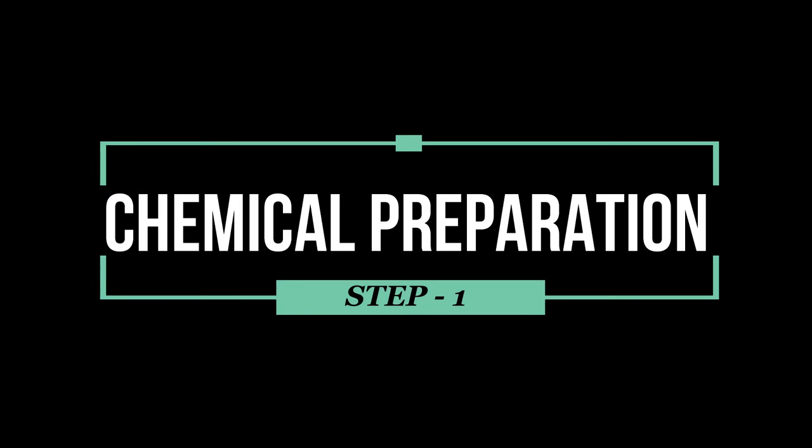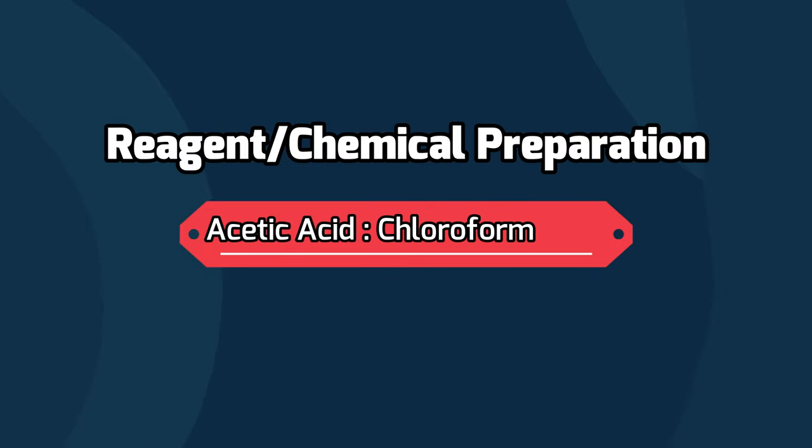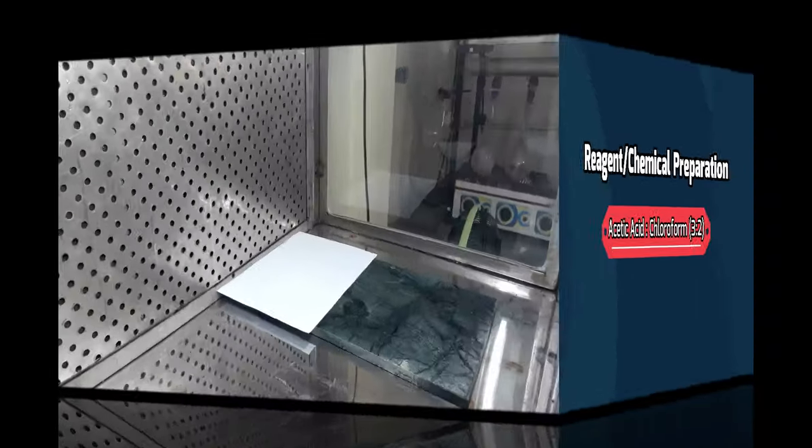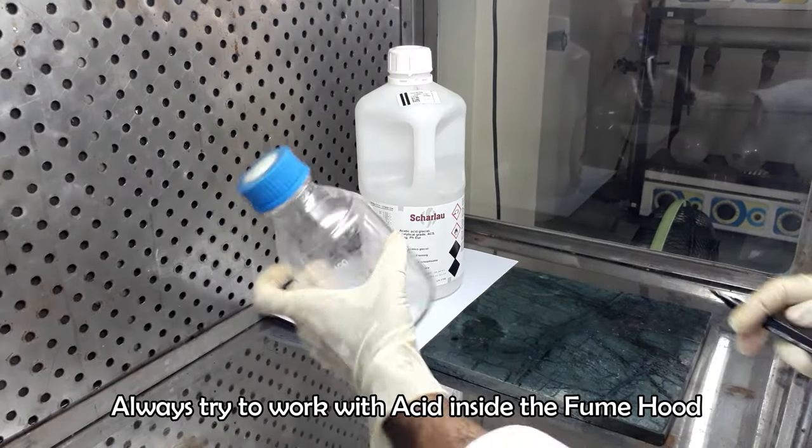Chemical preparation is very crucial for any test. Before going for the main test we will prepare chemicals and reagents. For the preparation of acetic acid and chloroform mixture, first label a reagent bottle.